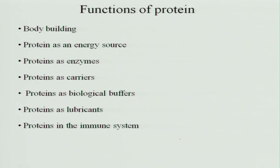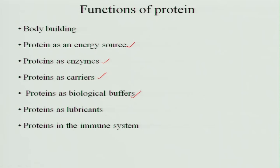The main function of protein is body building, and when sufficient carbohydrates are not supplied it also acts as a source of energy. Proteins are part of enzymes, and they act as carriers — for example, hemoglobin in the blood is a combination of iron and protein. Proteins act as buffers to maintain acid-base balance, act as lubricants, and are important for the immune system, helping in protection against disorders. Protein is critical right from infancy; infants have milk as their main food, rich in protein, and a baby grows from 2 to 3 kgs up to 60 kgs as an adult — that is how important protein is.